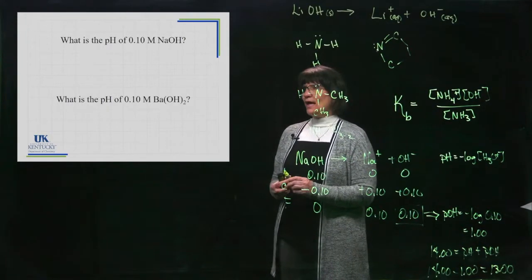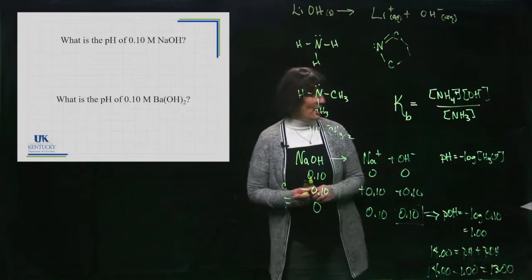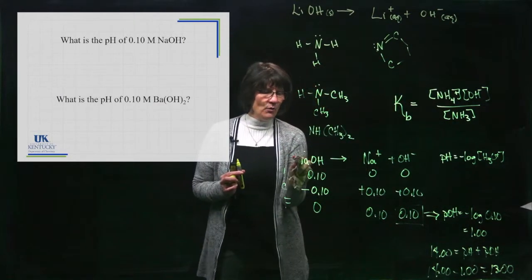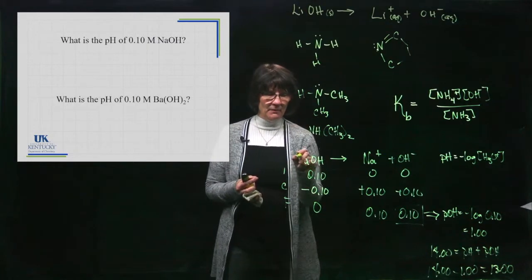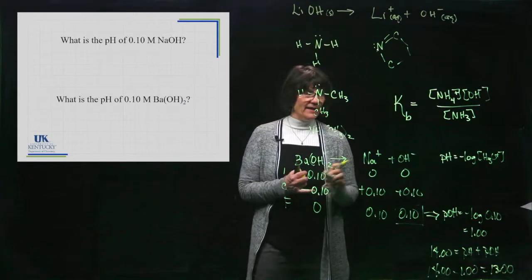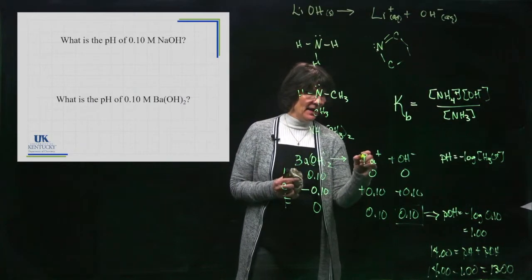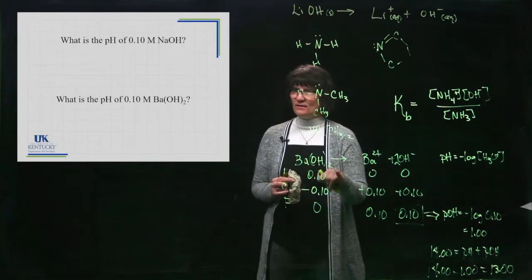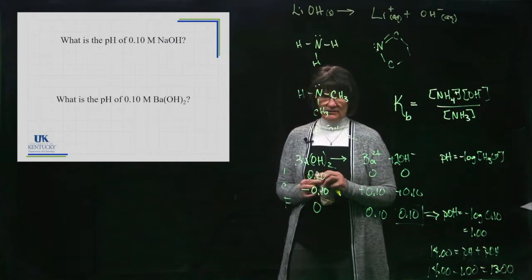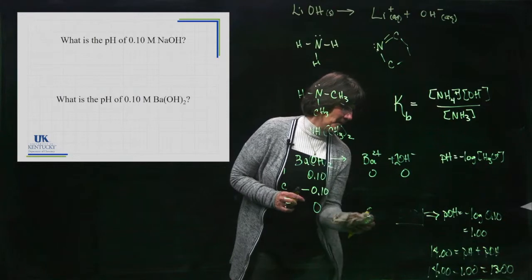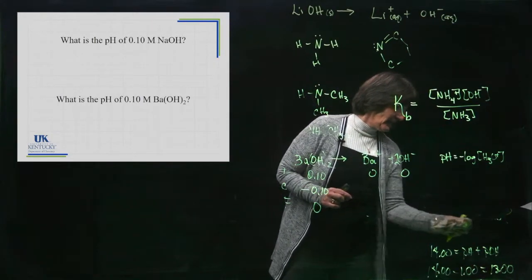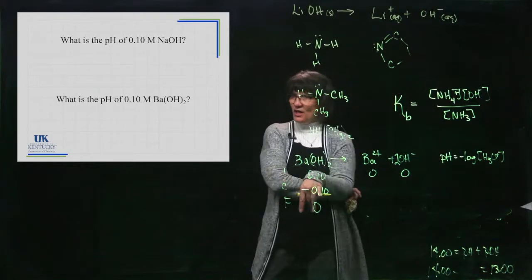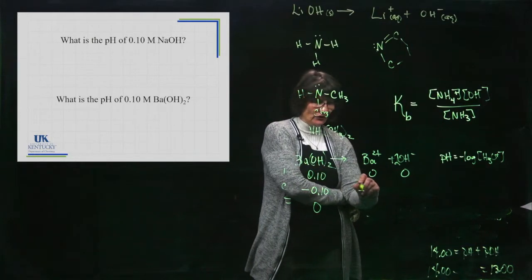In our next one, we're going to calculate the pH of barium hydroxide. Instead of the N, I'm going to put a B, barium hydroxide. Barium has a 2 plus charge. And what should sit right there? A 2. Every time one of these dissolves, you're going to get 1 barium and 2 hydroxides. So let's erase my table and let us get our numbers now. We'll have a different value right there.